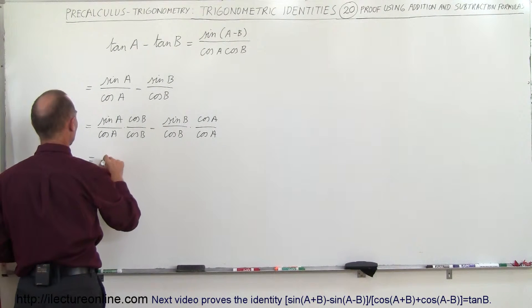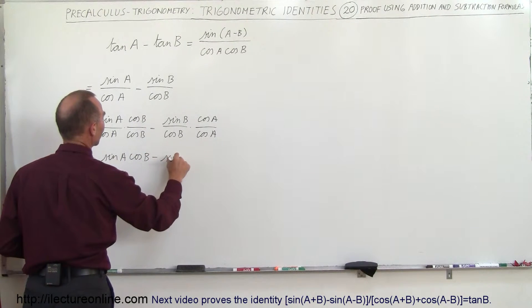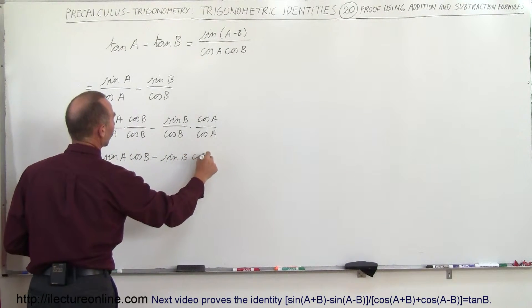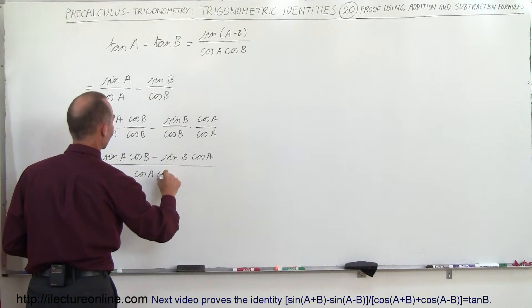So this is equal to sine A times cosine B minus sine B times cosine A, all divided by the common denominator of cosine A times cosine B.